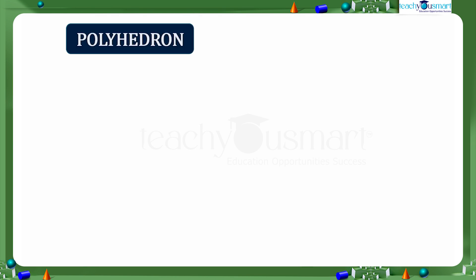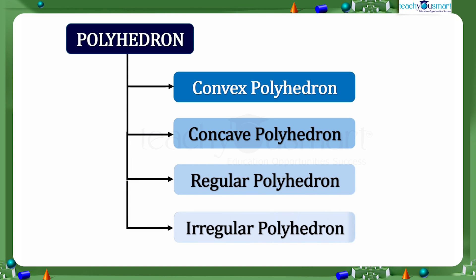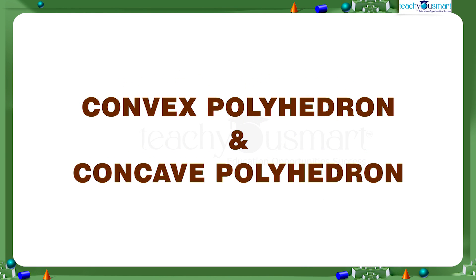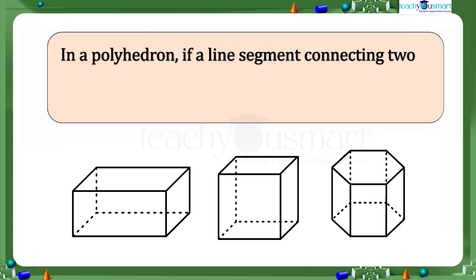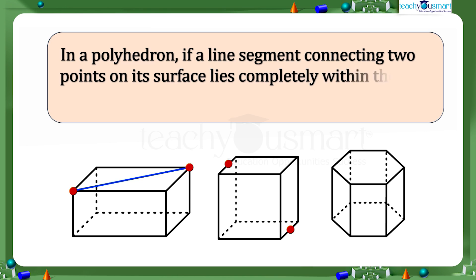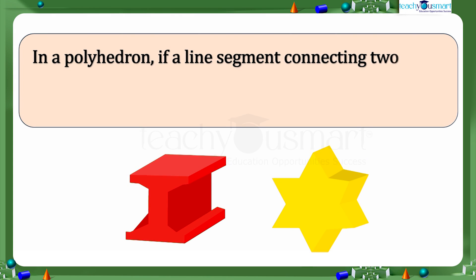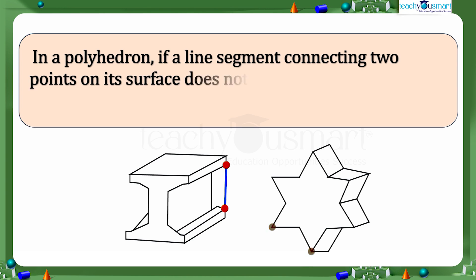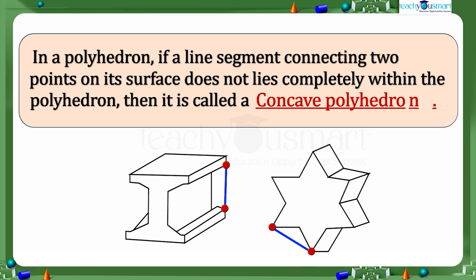Now let's see the classification of polyhedrons: convex polyhedron and concave polyhedron. In a polyhedron, if a line segment connecting two points on its surface lies completely within the polyhedron, then it is called a convex polyhedron. While if a line segment connecting two points on its surface does not lie completely within the polyhedron, then it is called a concave polyhedron.